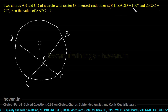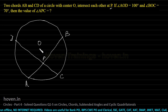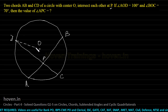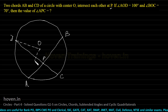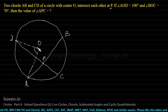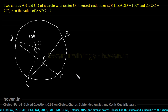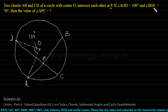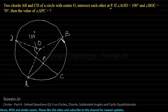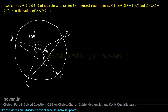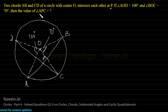Angle AOD is 100 degrees. Let us join O and D and also join O and A. This angle AOD has been given to us as 100 degrees. Angle BOC — let us join B and O and also O and C. This angle BOC has been given to us as 70 degrees. Then the value of angle APC is what? This is APC, so we have to find out the value of this angle.